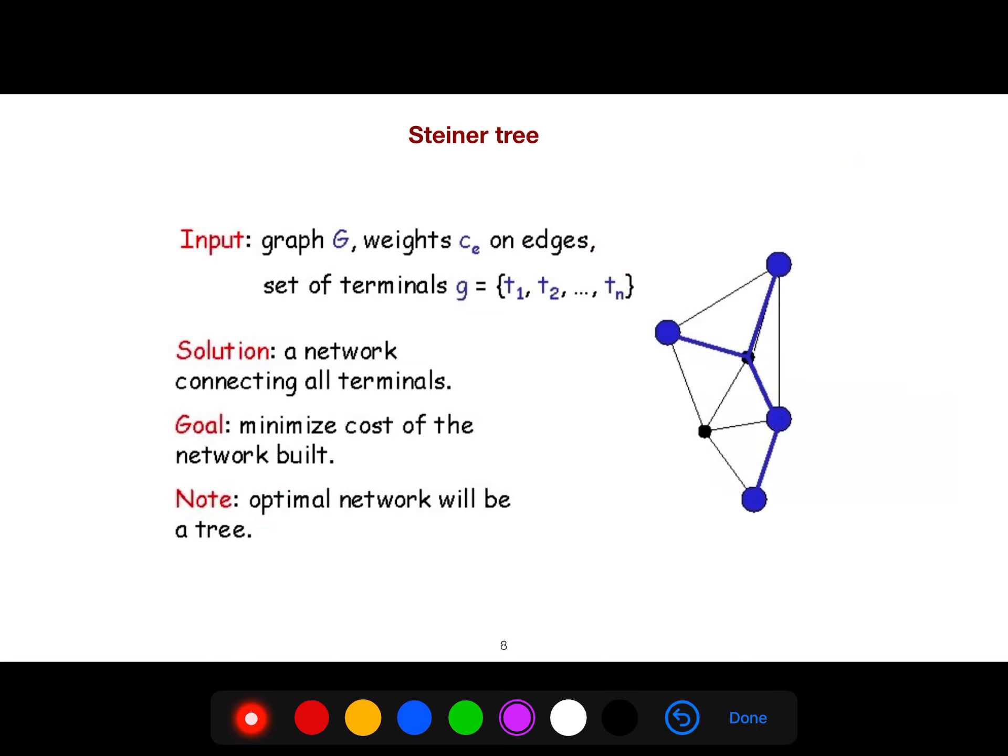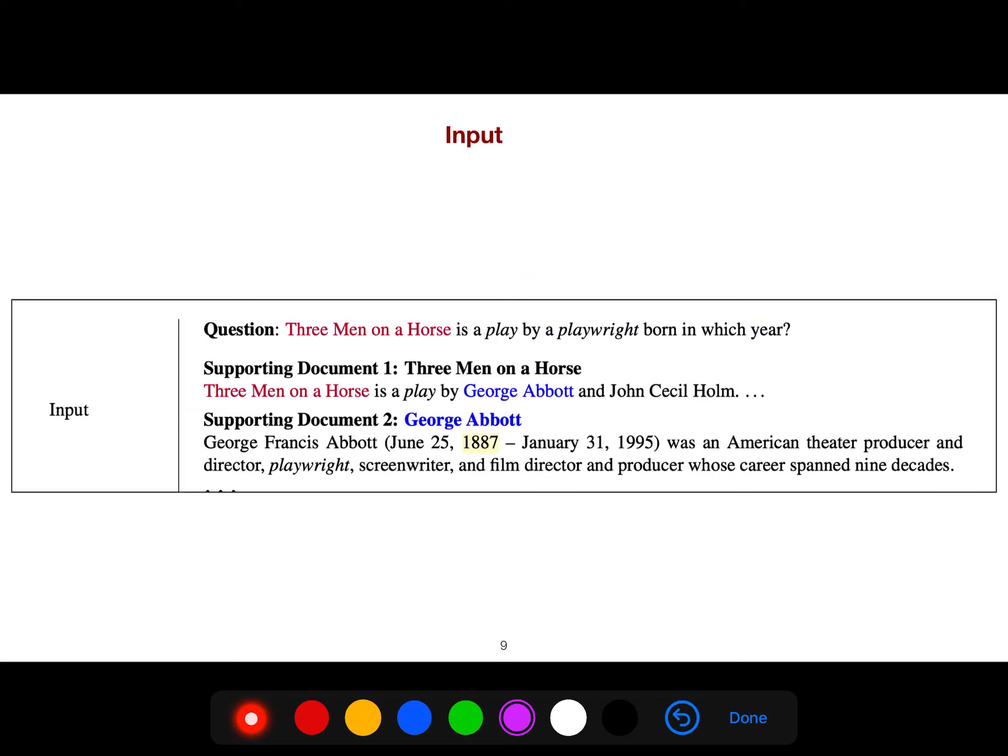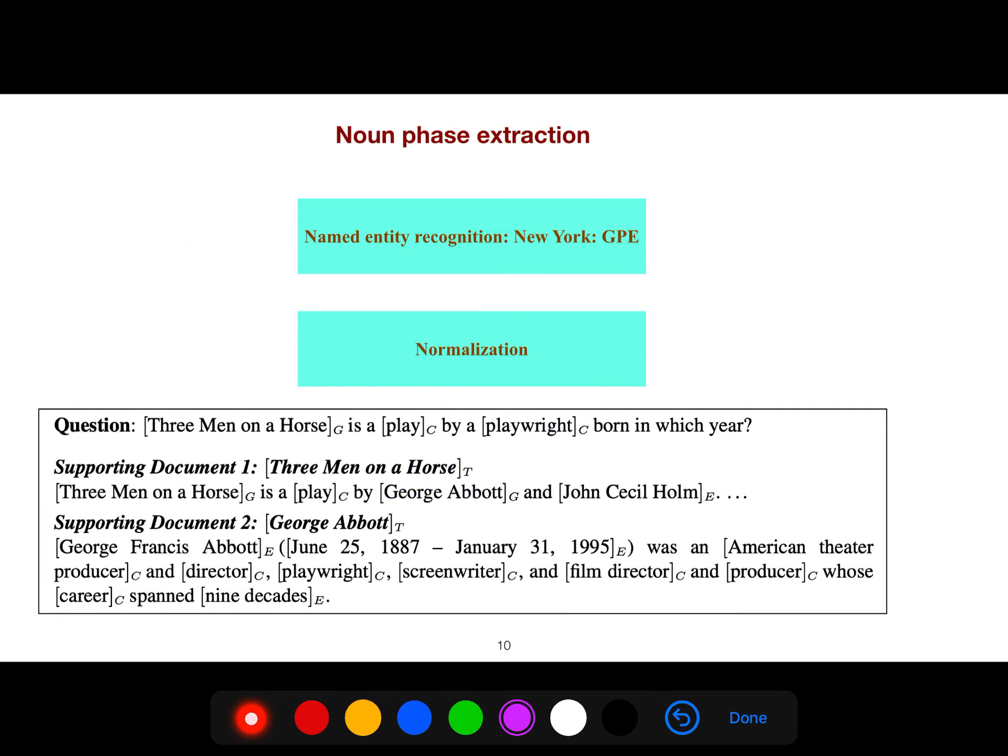In Steiner tree, we have a graph, weights, and a set of terminals, and a network connecting all terminals. We minimize the cost of network built. An optimal network will be a tree. This is a typical Steiner tree. The input is given a question and a set of supporting documents.